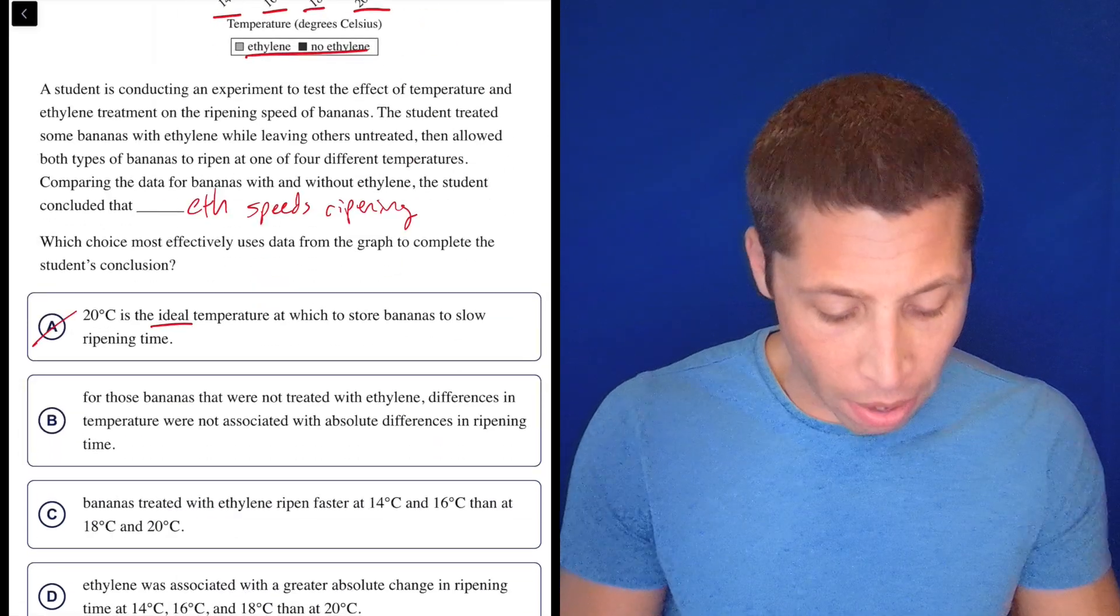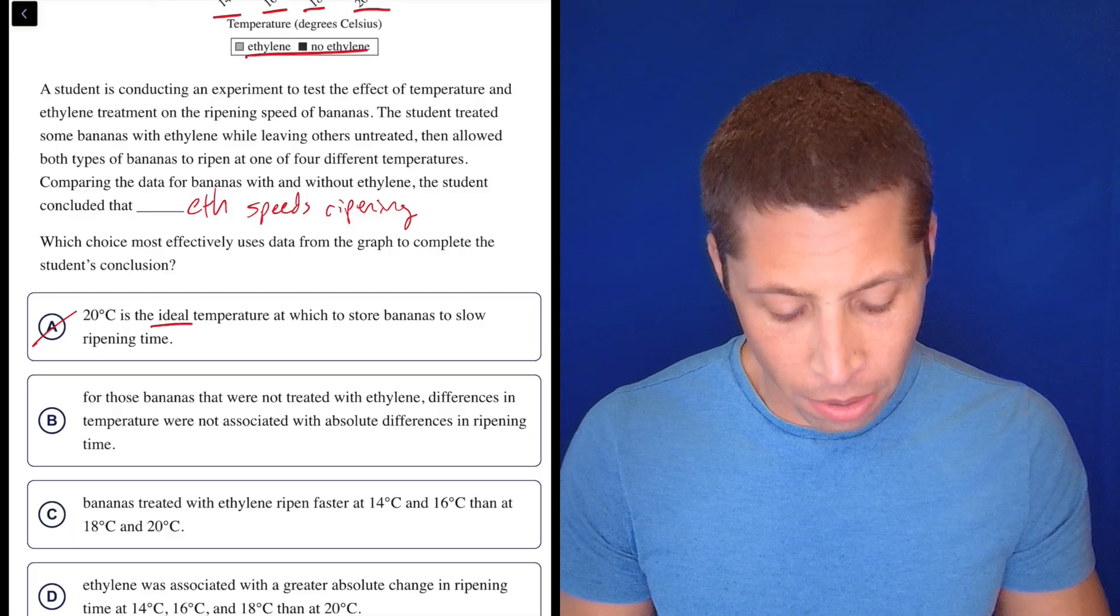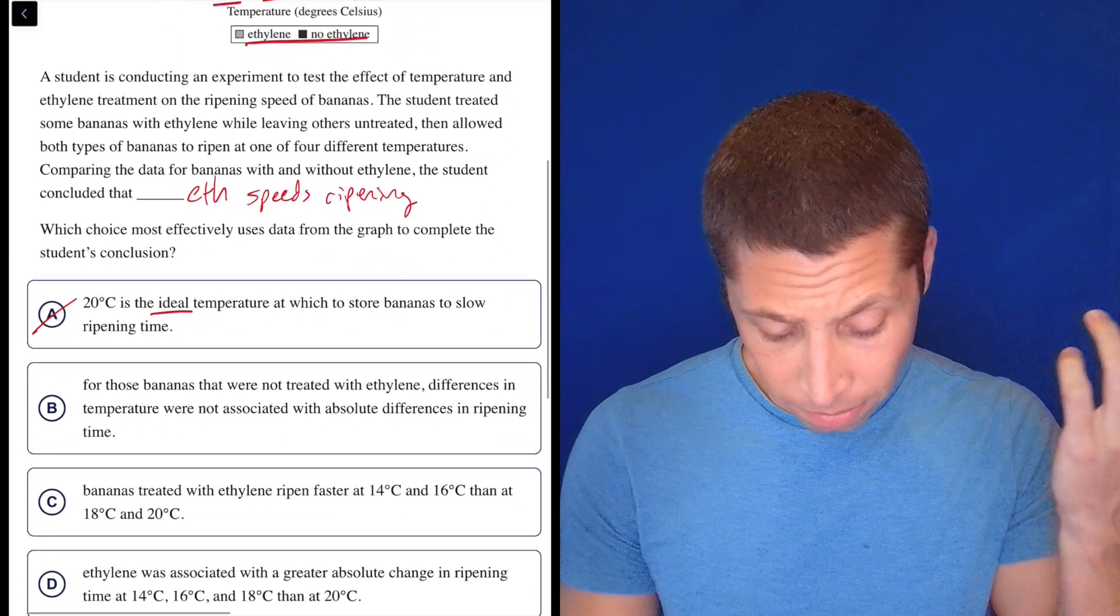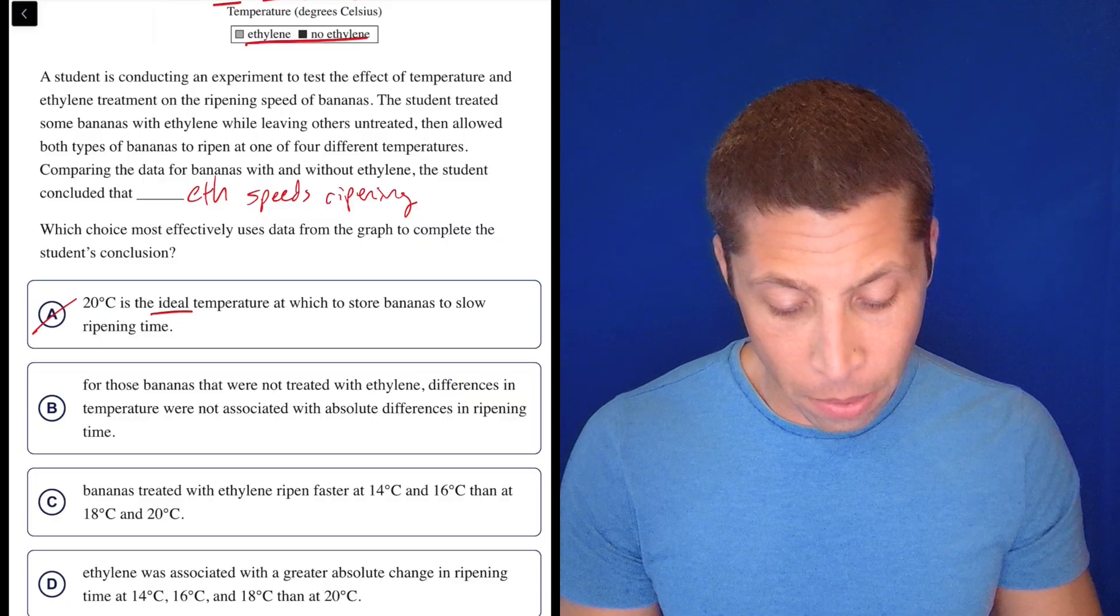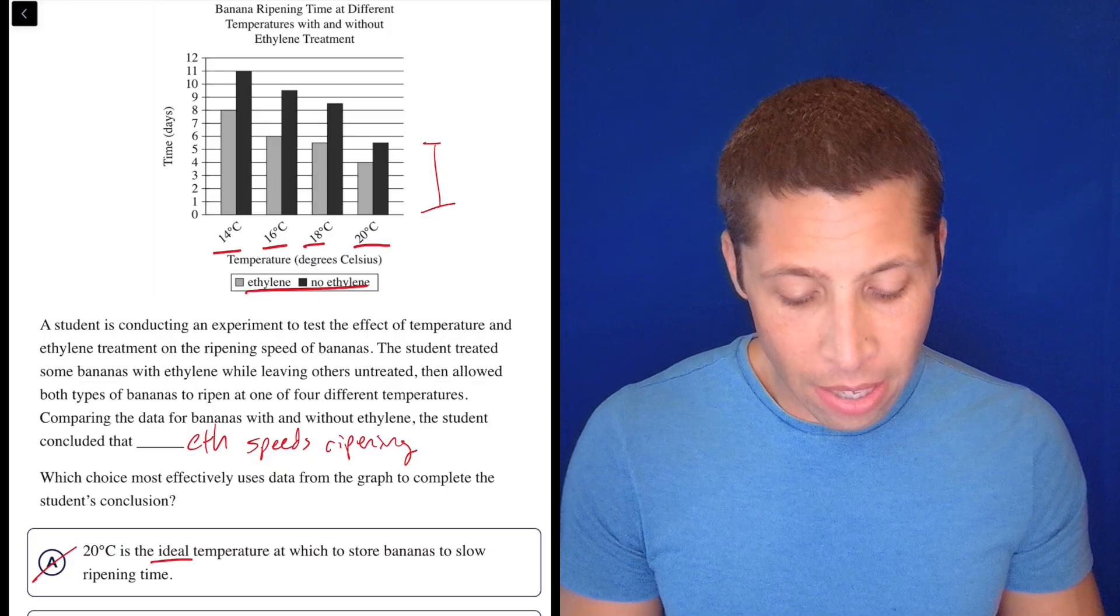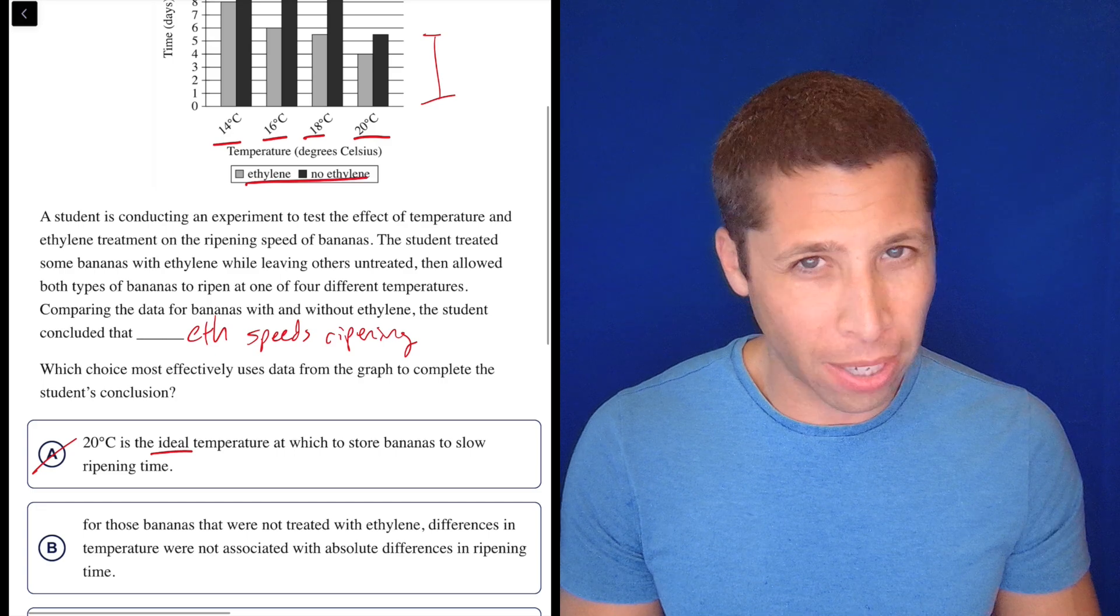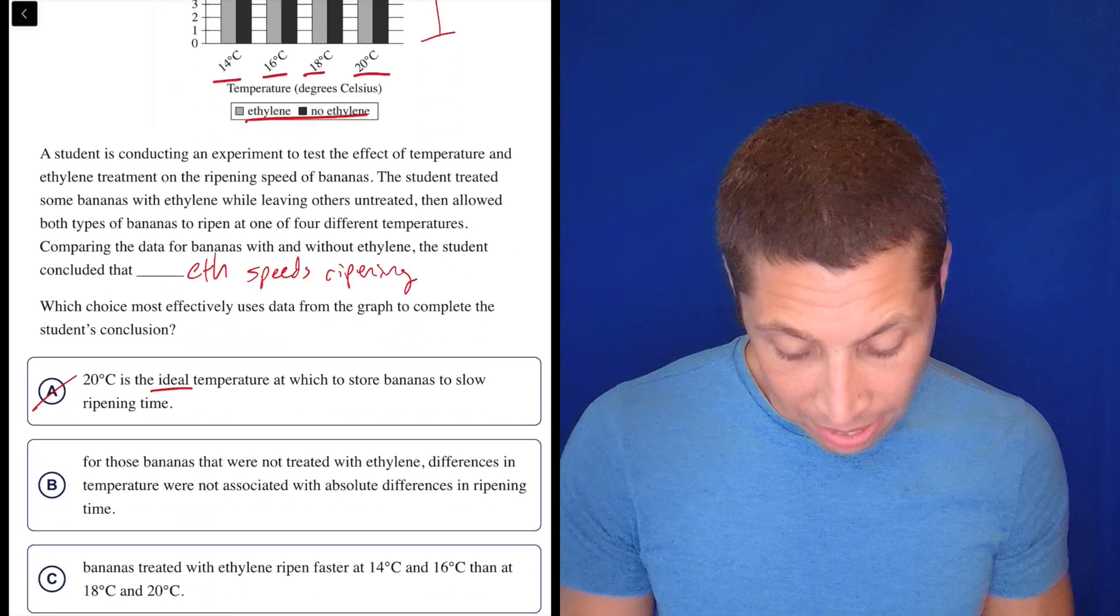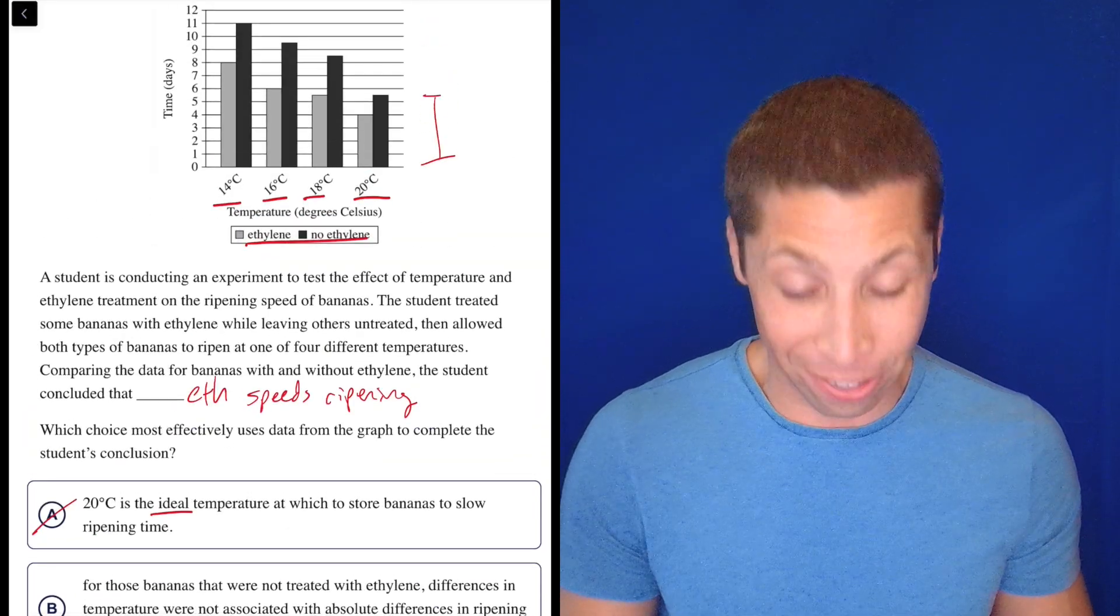For those bananas that were not treated with ethylene, differences in temperature were not associated with absolute differences in ripening time. What? For those bananas that were not treated with ethylene, so that's the black bars. Differences in temperature were not associated with absolute differences in ripening time. Well, isn't that obviously true? The black bars are different heights. I don't know what they mean by absolute differences. I guess we could leave that, but this just seems like intuitively wrong.